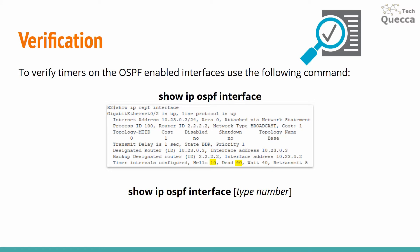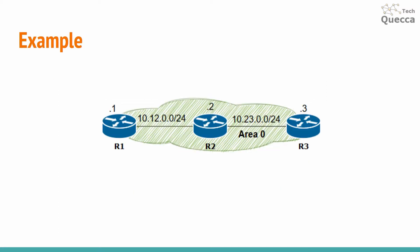To verify timers on the OSPF-enabled interfaces, use the following command: show ip ospf interface. In the output of this command you will find information for all your OSPF-enabled interfaces, including the configured hello and dead interval. If you want to filter the output by one specific interface, you can specify the interface type and number.